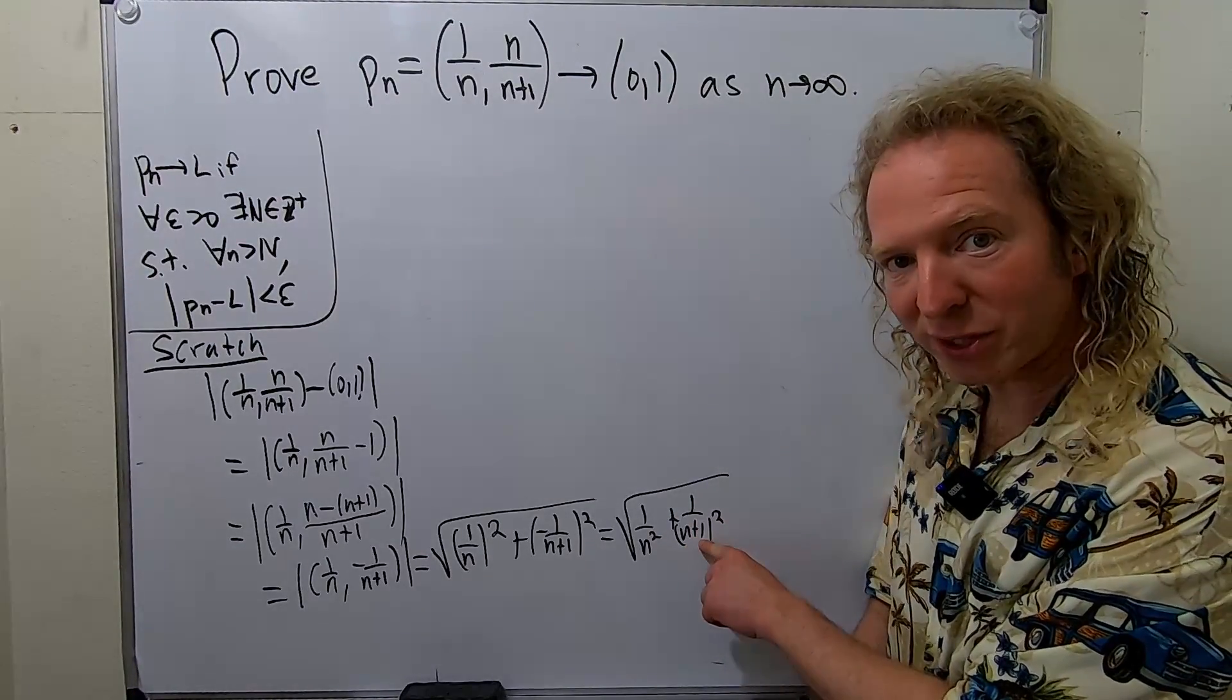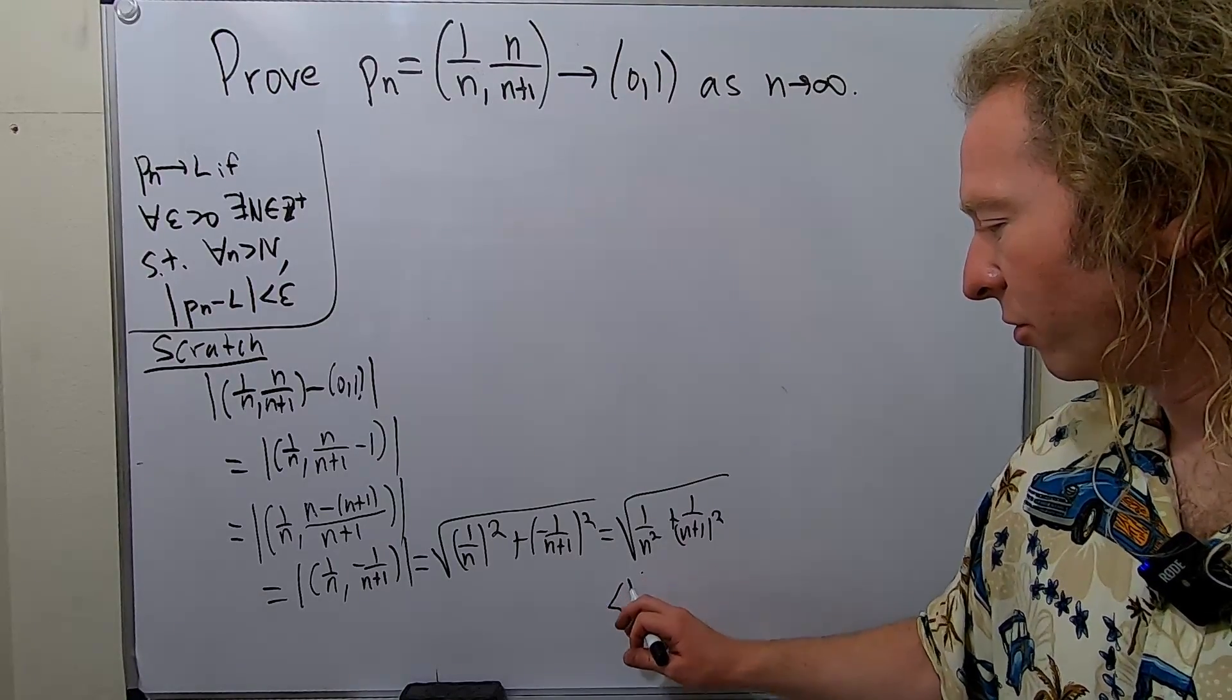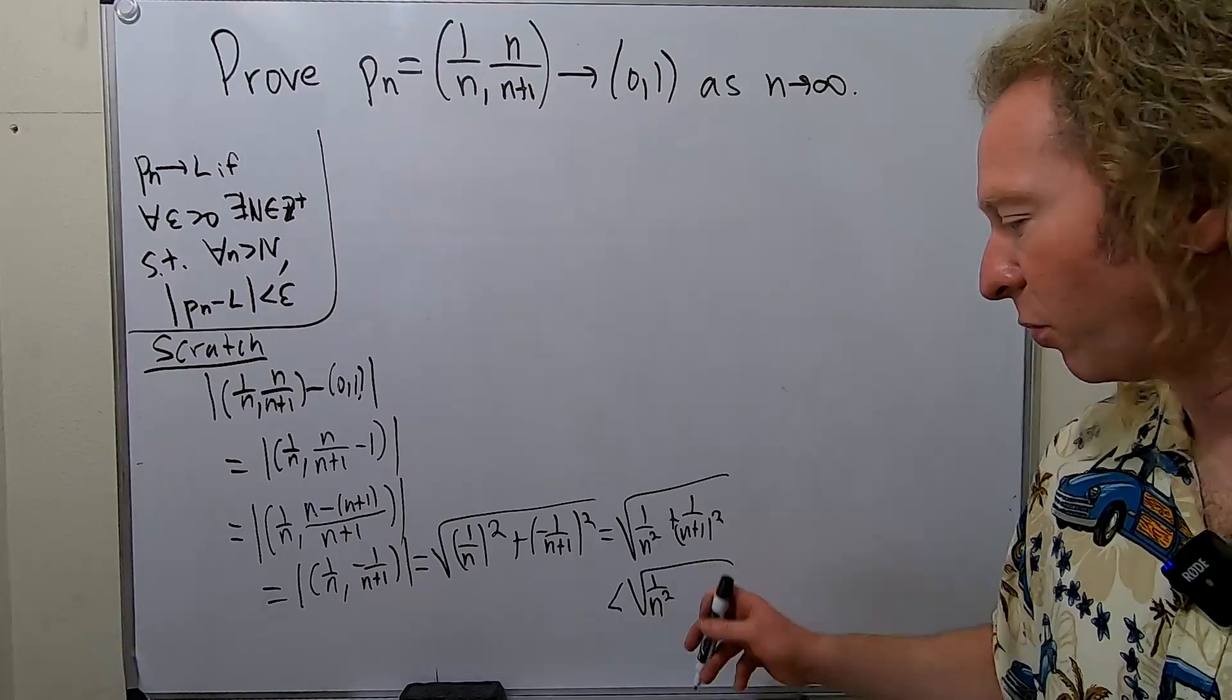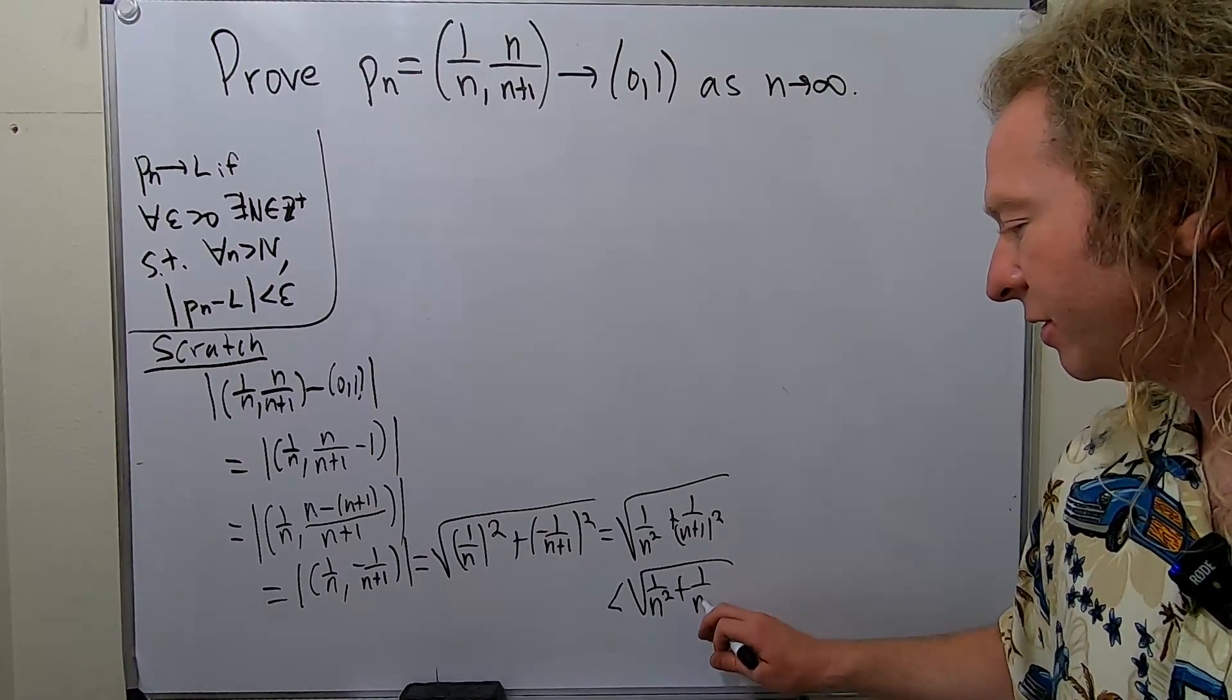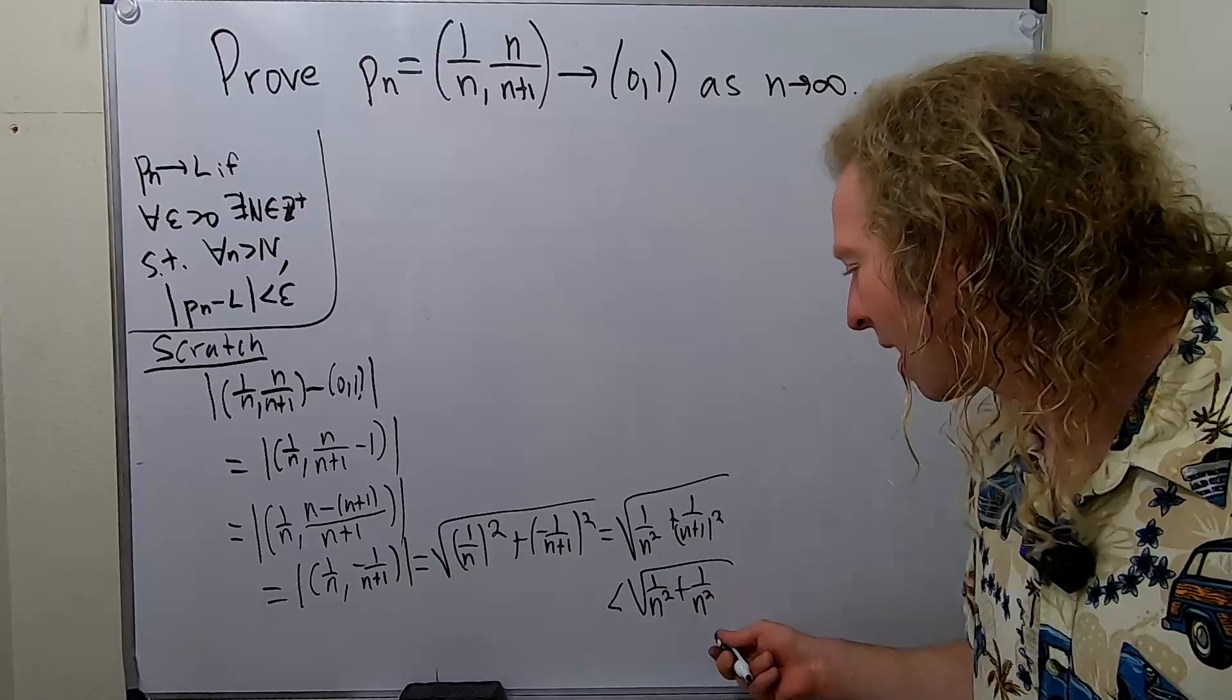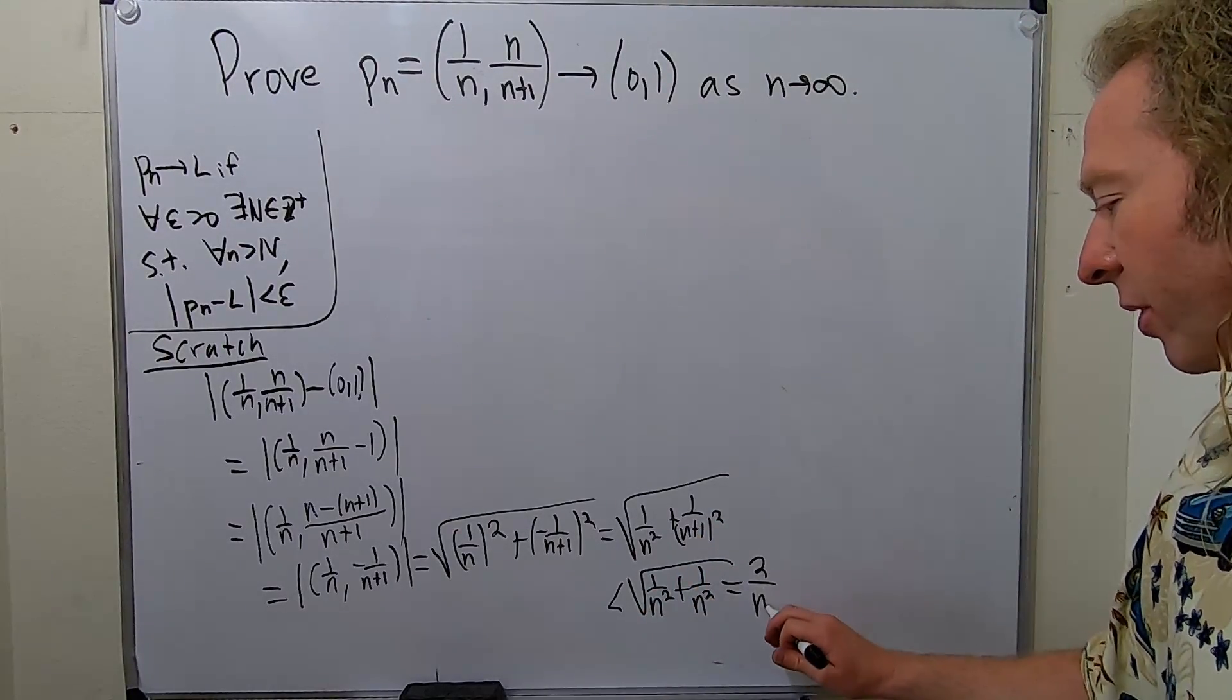It'd be really nice if that 1 was gone. So what I'll do is this. I'll say this is less than square root, keep this one here, and then we'll get rid of this 1. We can do that because this fraction is smaller than this fraction. So we can drop it.